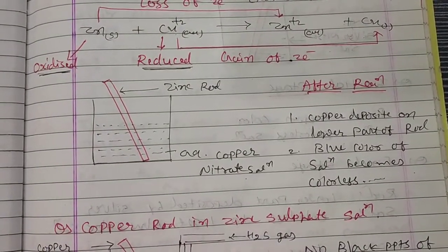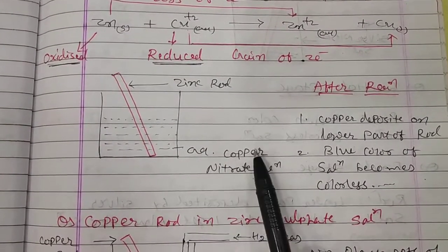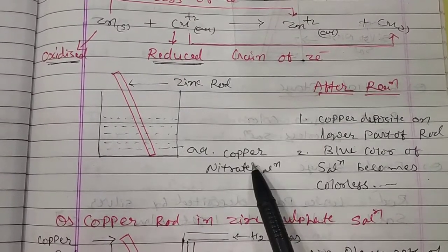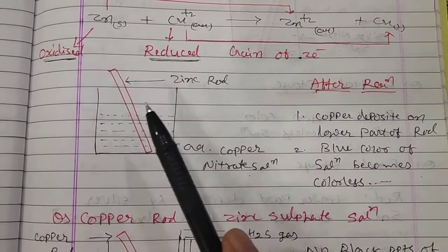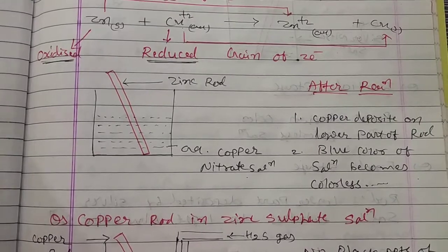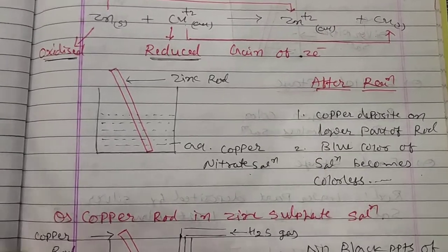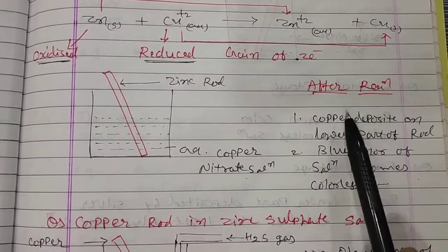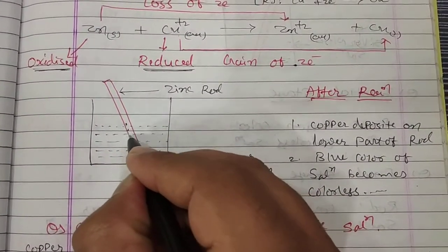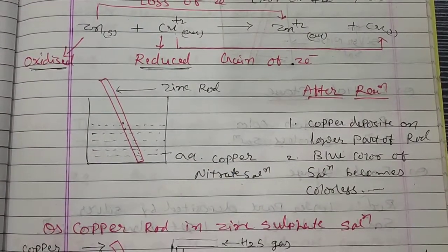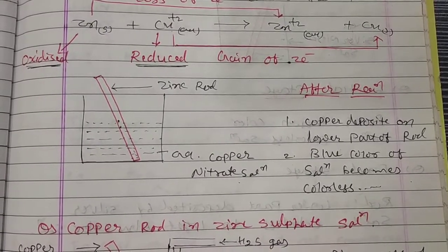Let's discuss the practical approach. Initially, zinc rod is dipped in copper solution. The copper solution is blue in color. The zinc rod is almost white, or you can say silver and shiny. After some time, as the chemical reaction happens, copper deposits on the lower part of the rod.